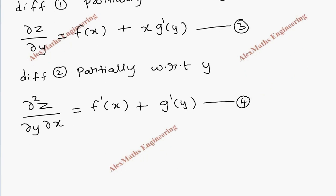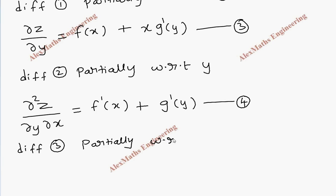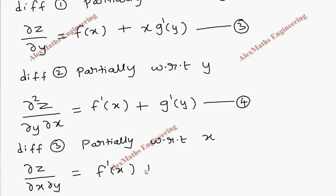Then let's take the third expression and differentiate it partially with respect to x. So dou z by dou x dou y equals f of x derivative, which is f dash of x. Now y is a constant, so x derivative is 1, and this constant g dash of y remains as it is. This is our fifth expression. But both are the same — fourth and fifth expressions appear the same.